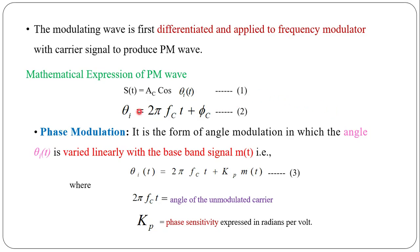The mathematical expression for PM: for the angle modulated wave, s(t) = Ac·cos(θi(t)), where θi is the angle of the modulated wave, represented as 2πfc·t + φ(t). Here φ(t) = φc, which is the angle varied linearly with the message signal, given by kp·m(t), where kp is the phase sensitivity and m(t) is the message signal.